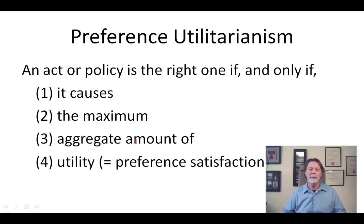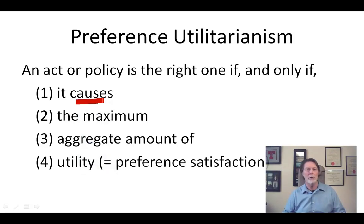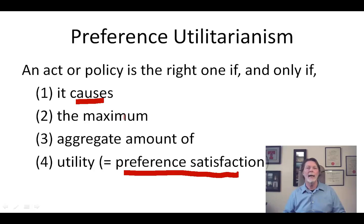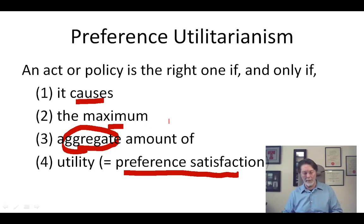On preference-based utilitarianism, it's consequentialist, so your policy is right if you cause utility — in this case, preference satisfaction — and you want to cause the maximum amount of this. To get that, you have to add everything up. You have to add everybody's preferences up.